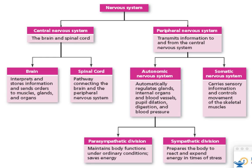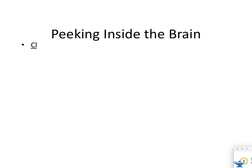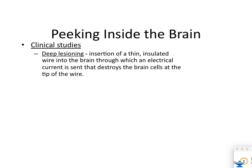What nervous system engages with stress? It's the sympathetic. Alright — peeking inside the brain. Your first method is clinical studies, done on individual patients where research is being conducted. We also literally burn a hole in your brain — that's deep lesioning right here. You have the surface of your brain and then the core of your brain.